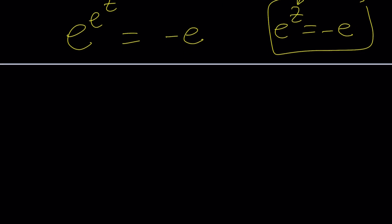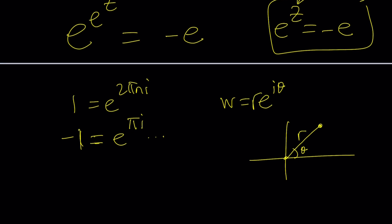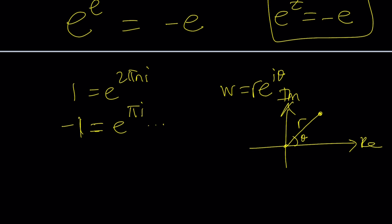So we can basically write 1 as e to the power 2πni. We can write negative 1 as e to the power πi and obviously many other forms. So there is a way to write pretty much any number. In general any complex number w can be written as e to the power iθ where θ is the argument. So let's say w is located here. This is θ. This is the r which is the modulus. This is real. This is imaginary. This is called the argand plane. Welcome to the argand plane.